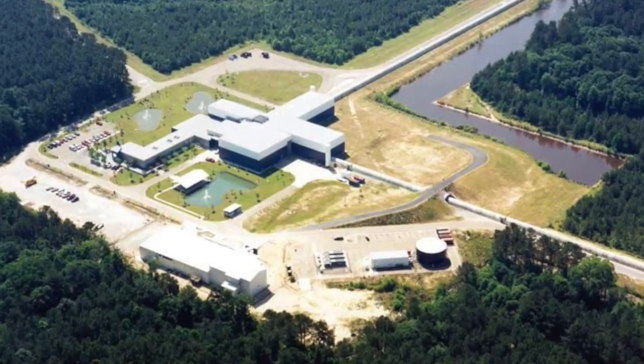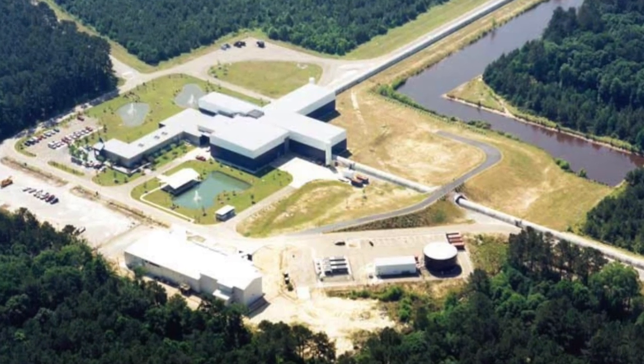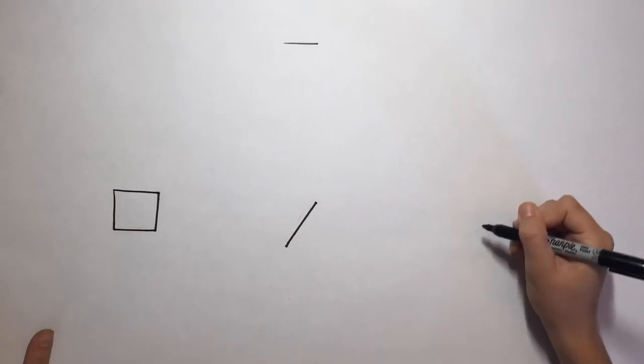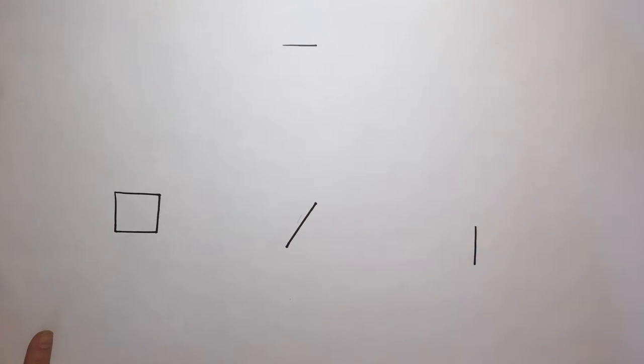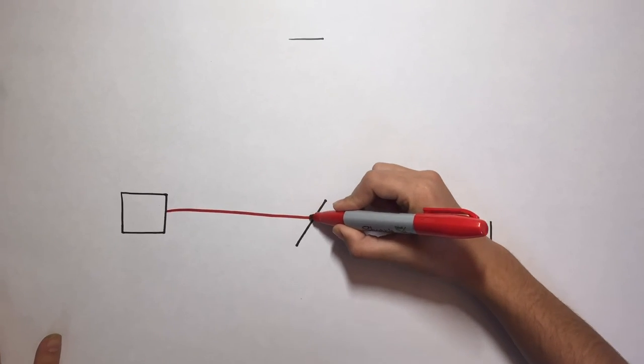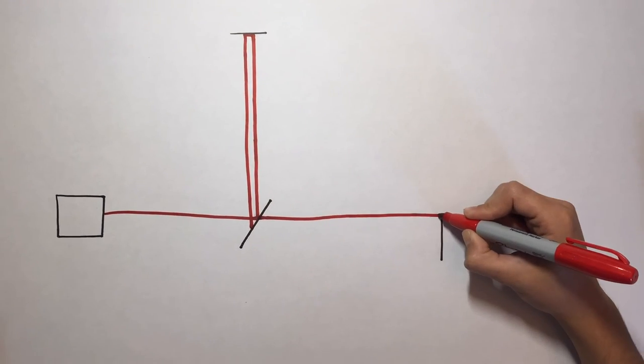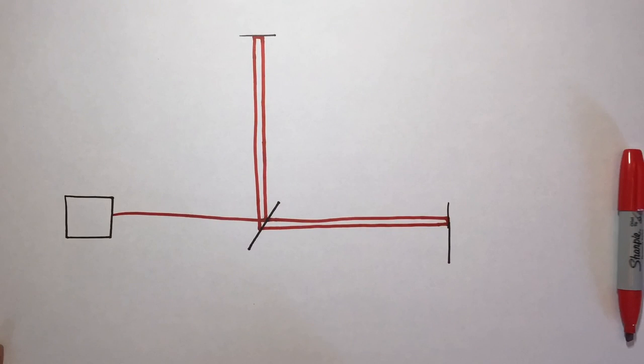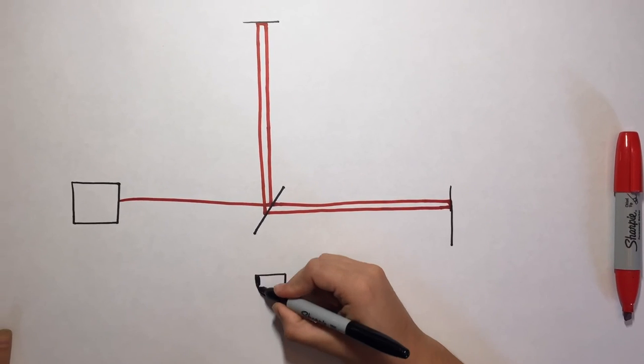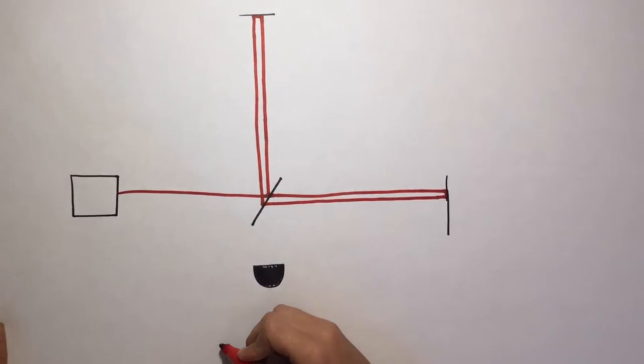A laser interferometer can be used to detect these shifts on Earth. It consists of a beam splitter and one mirror on each end. A laser is shot through the beam splitter and the two beams travel down arms of equal length. They are then reflected by the mirrors and meet back at the beam splitter. The beams create an interference pattern, which is displayed on the photodetector.